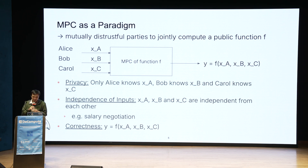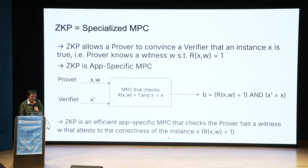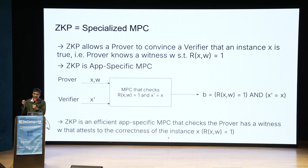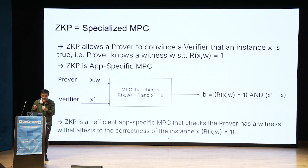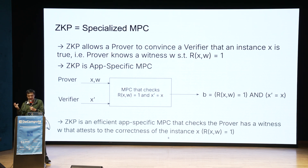The paradigm doesn't say anything about secret sharing or garbled circuits. We can also look at zero knowledge proof as a specialized MPC where the MPC box checks the relation on the statement and the witness, outputting one bit if the statement matches between verifier and prover and the relation check is successful. So zero knowledge proof is an efficient application-specific MPC.